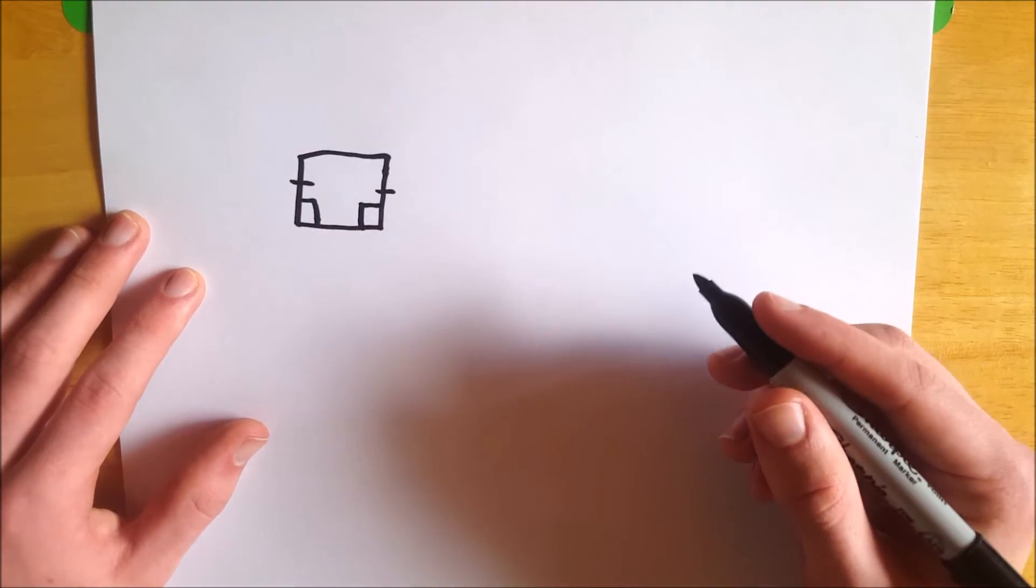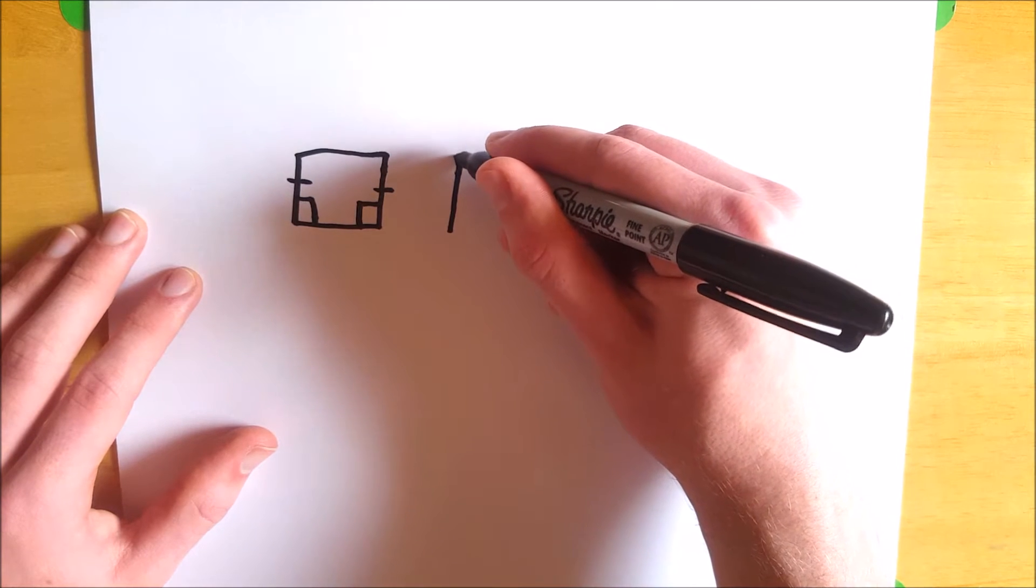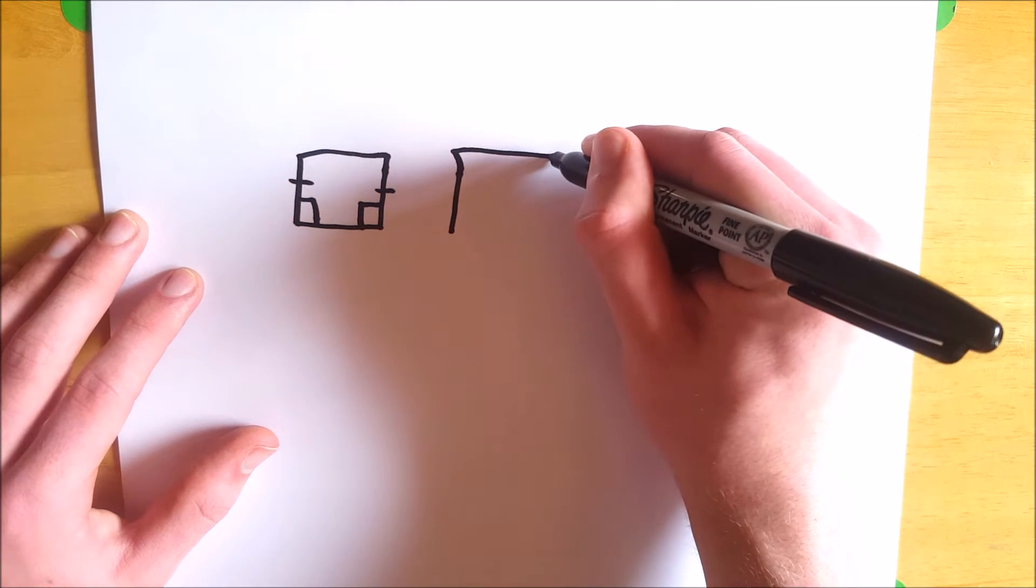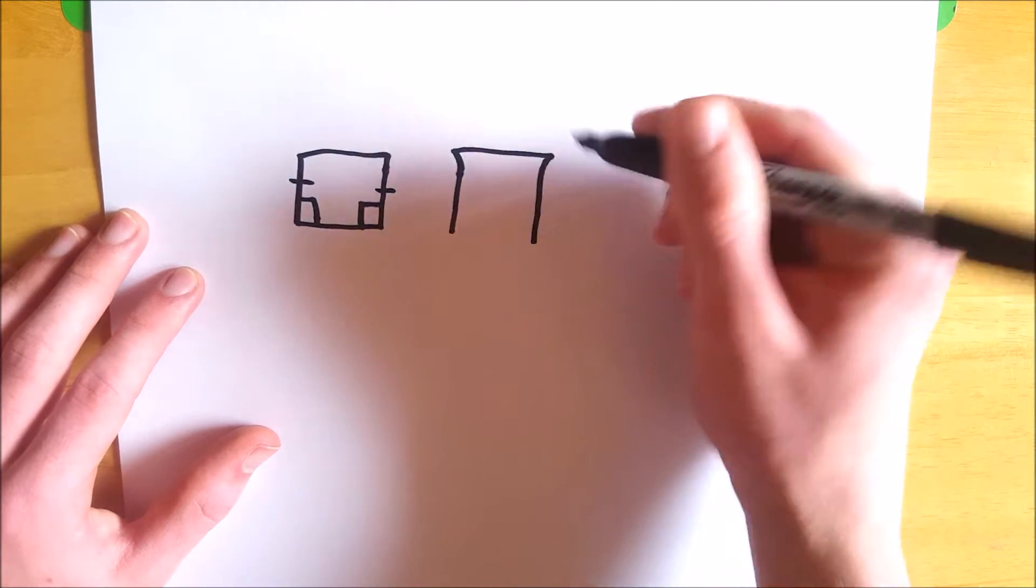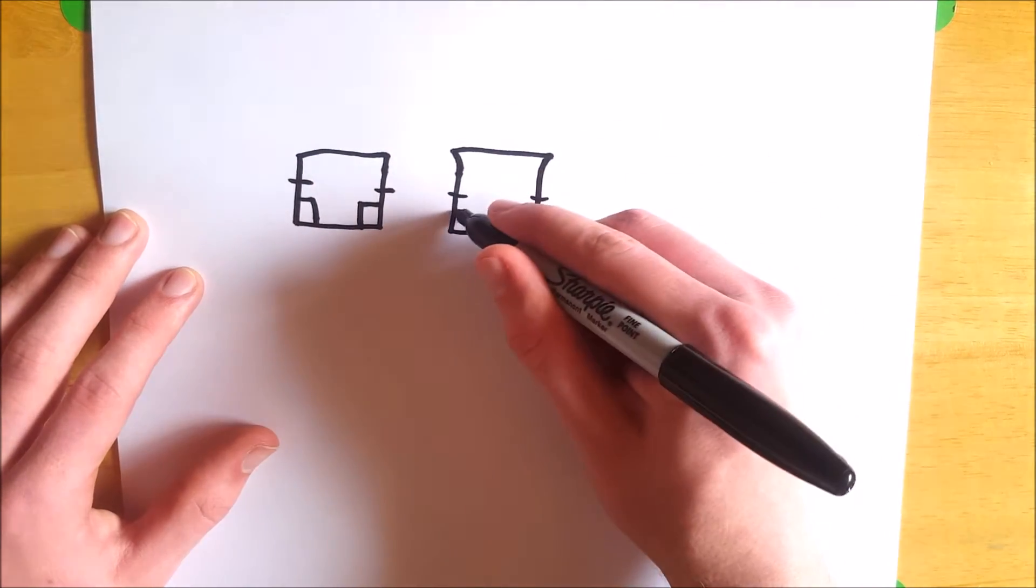Now, a Saccheri Quadrilateral, often you'll see it drawn something like this, with the angles at the top, which are called the summit angles, being kind of curvy, because you don't know what those angles are.